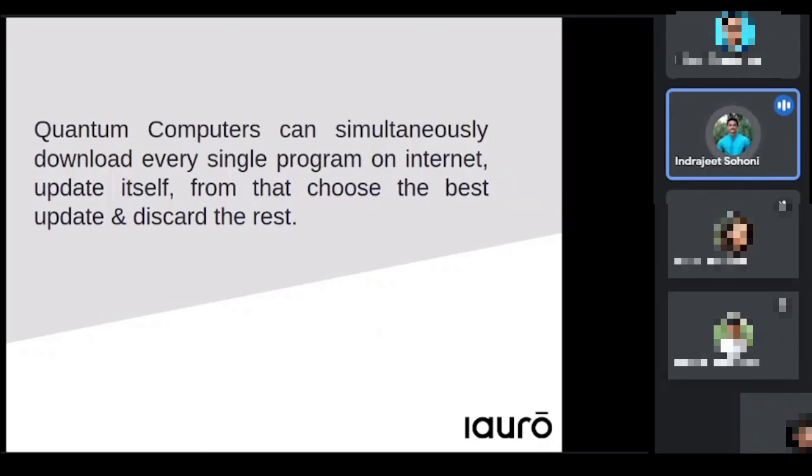These quantum computers can simultaneously download every single program on the internet, update itself, and from that use the best and discard the rest. This is the core principle on which quantum computers are based. It chooses the best outcome possible for a problem or for a mathematical equation.